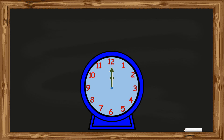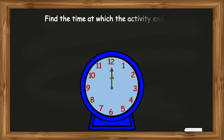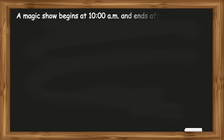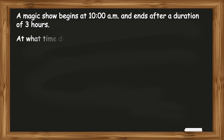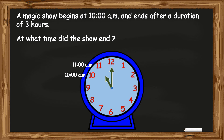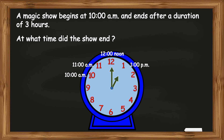Now we learn how to find the time at which an activity ended if the starting time and duration are given. For example, a magic show begins at 10 a.m. and ends after a duration of 3 hours. At what time did the show end? After 1 hour it was 11 a.m. After 2 hours it was 12 noon. And after 3 hours the time was 1 p.m. Hence the magic show ended at 1 p.m.